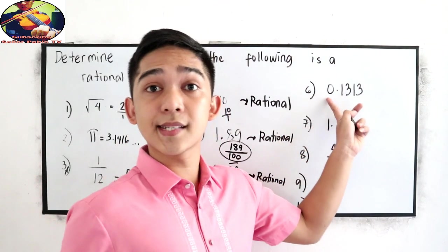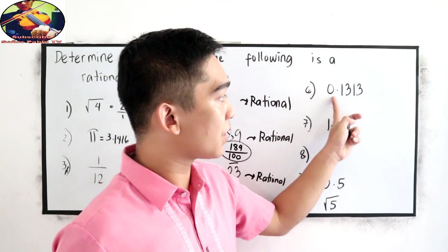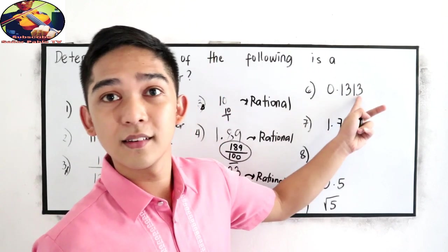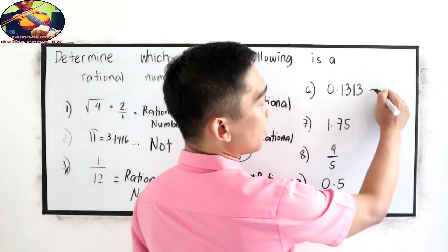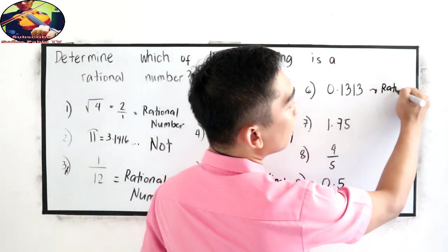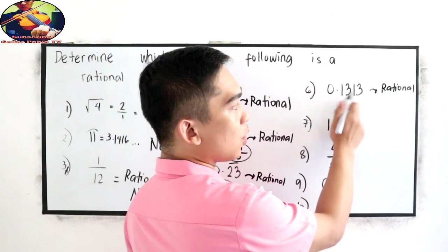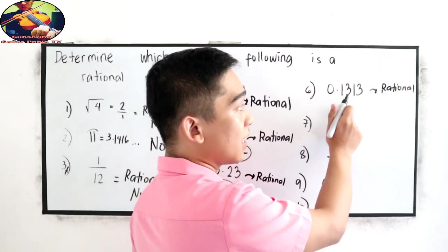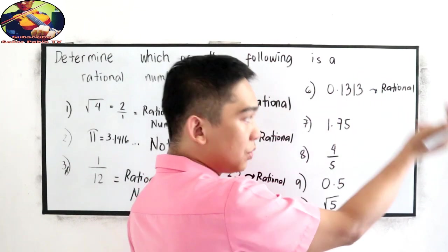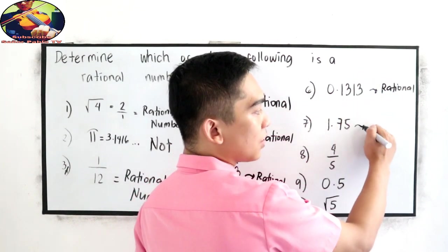Number 6, 0.1313. This is a rational number. Again, we're going to discuss in our next videos on how to simplify or how to write this decimal form into rational number, rational form.